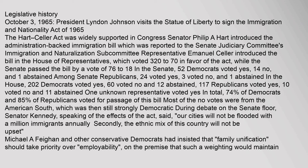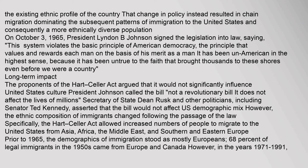During debate on the Senate floor, Senator Kennedy, speaking of the effects of the act, said: 'Our cities will not be flooded with a million immigrants annually. Secondly, the ethnic mix of this country will not be upset.' Michael A. Fayon and other conservative Democrats had insisted that family unification should take priority over employability, on the premise that such a weighting would maintain the existing ethnic profile of the country. That change in policy instead resulted in chain migration dominating the subsequent patterns of immigration to the United States and consequently a more ethnically diverse population. On October 3, 1965, President Lyndon B. Johnson signed the legislation into law, saying: 'This system violates the basic principle of American democracy — the principle that values and rewards each man on the basis of his merit as a man. It has been un-American in the highest sense, because it has been untrue to the faith that brought thousands to these shores even before we were a country.'